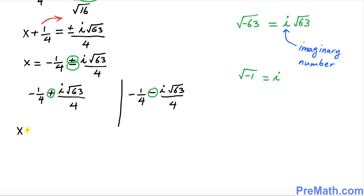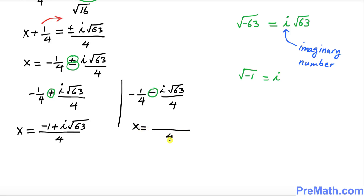Since 4 is a common denominator, one solution is x equals (negative 1 plus i times the square root of 63) over 4, and the second solution is x equals (negative 1 minus i times the square root of 63) over 4. As you can see, both solutions involve i as an imaginary number, meaning they are not real solutions.